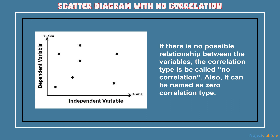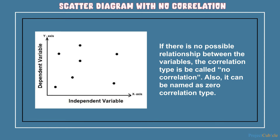With no correlation, the two variables are not linked and you cannot draw any line through them. For example, air temperature and shoe size have no correlation — as air temperature increases, shoe size is not affected.